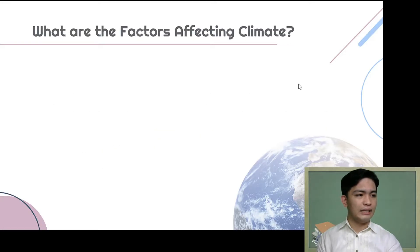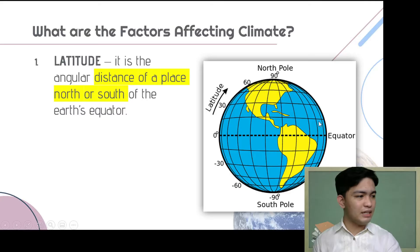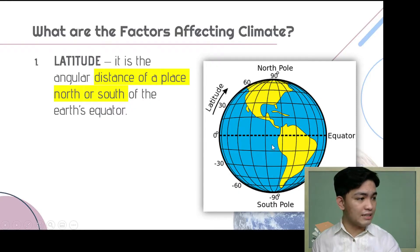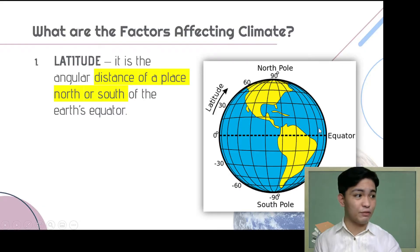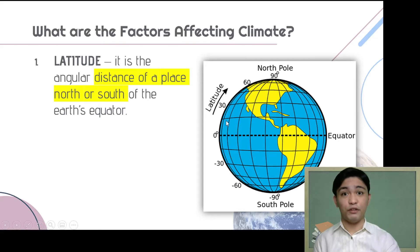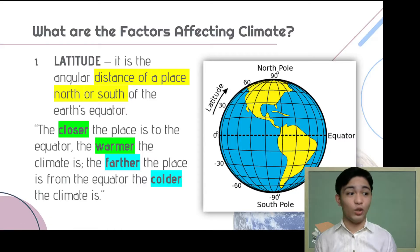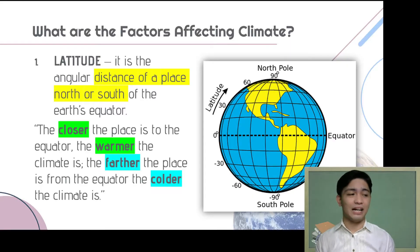Starting with the first factor: latitude. Latitude is the angular distance of a place north or south of the Earth's equator. The equator is the imaginary line that divides the Earth into two equal parts — the northern hemisphere and the southern hemisphere. Basically, latitude tells us how far north or south a place is from the equator, with values ranging from 0 to 90 degrees north or 0 to 90 degrees south.